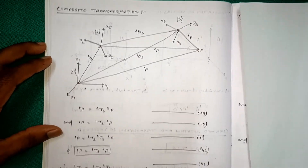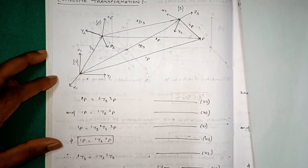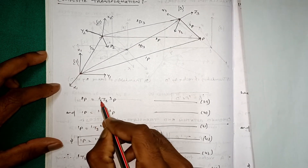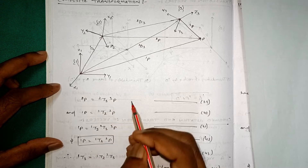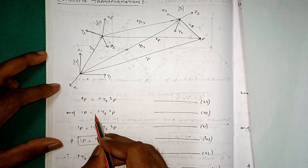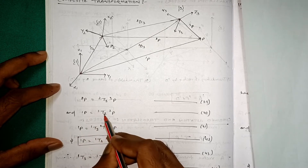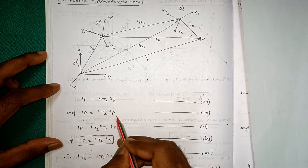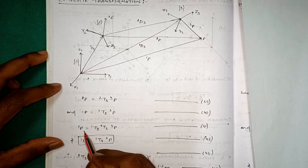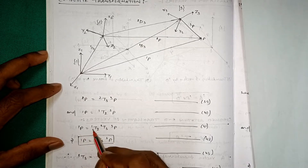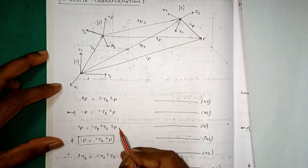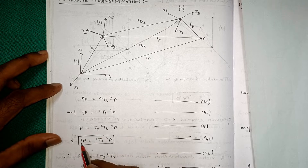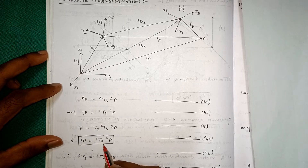Here, 2p is equal to 2t3 times 3p, and 1p is equal to 1t2 times 2p. So 1p is equal to 1t2 times 2t3 times 3p. That is called 1p is equal to 1t3 times 3p.